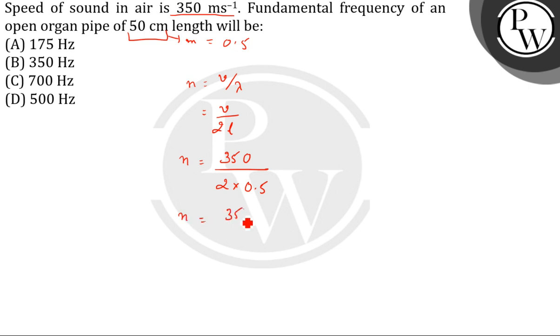This gives 350 divided by 1, which equals 350 Hertz. So the correct answer is option B: 350 Hertz. Thank you.